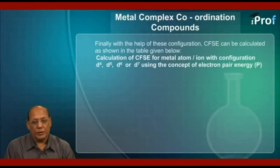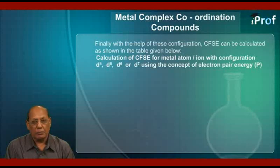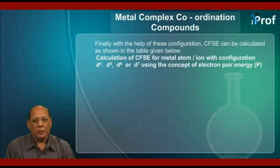Finally, with the help of these configurations, CFSE can be calculated as shown in the table given below. Here is a table which deals with calculation of CFSE for metal atom or ion with configuration D4, D5, D6, or D7, using the concept of electron pair energy P.